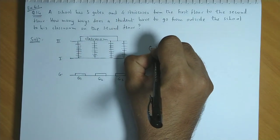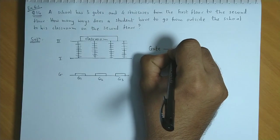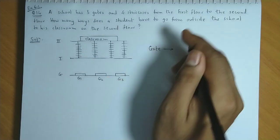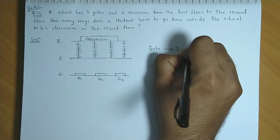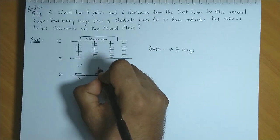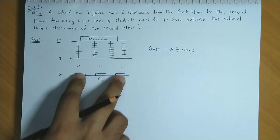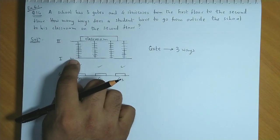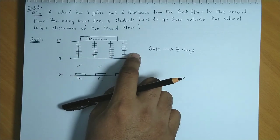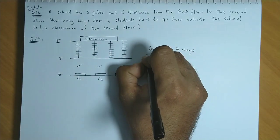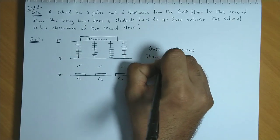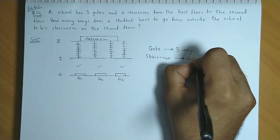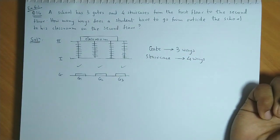First he has to select a gate. For entering, three gates are available. So the gate can be selected in three ways. Now he enters through one of the three gates and reaches the first floor. From the first floor to the second floor, he has to select a staircase. The staircase can be selected in four ways.